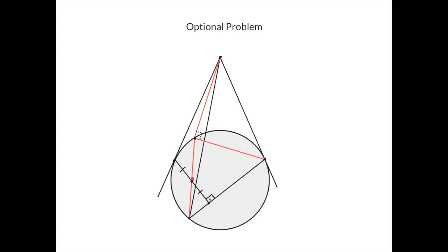Let this point be the midpoint of this segment, so this equals this. And now, connect this point and this point with a line intersecting the circle at this point. We need to prove that this line is perpendicular to this line.